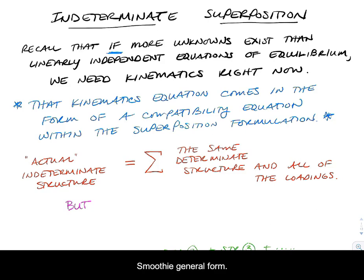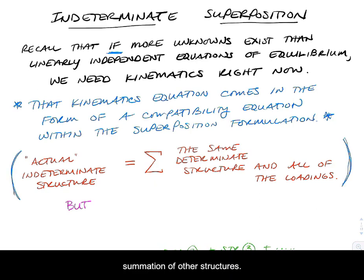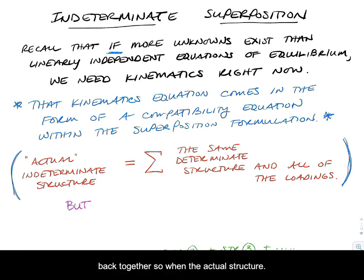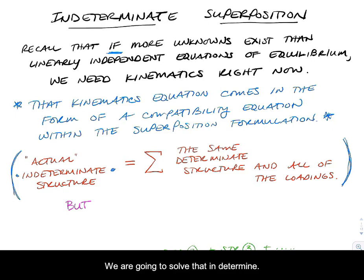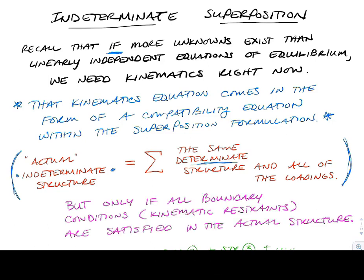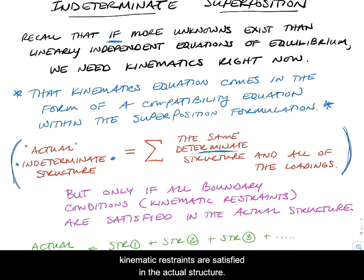The general form is that the actual structure is equal to a summation of other structures. The actual problem is the solution of many pieces added back together. When the actual structure is indeterminate, we solve it as a summation of determinate structures with all of the loadings. But this can only be true if all boundary conditions and all kinematic restraints are satisfied in the actual structure.